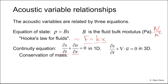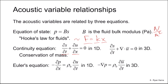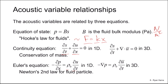The last relationship of the acoustic variables is called Euler's equation. The spatial rate of change of pressure is related to the atmospheric density rho naught times the partial derivative of u with respect to t. Since u is the fluid particle velocity, the time rate of change of velocity is fluid particle acceleration. If we multiply volume by both sides of this equation, the right-hand side becomes mass times acceleration — so Euler's equation is a realization of Newton's second law for acoustics. These are the relationships among the three acoustic variables.